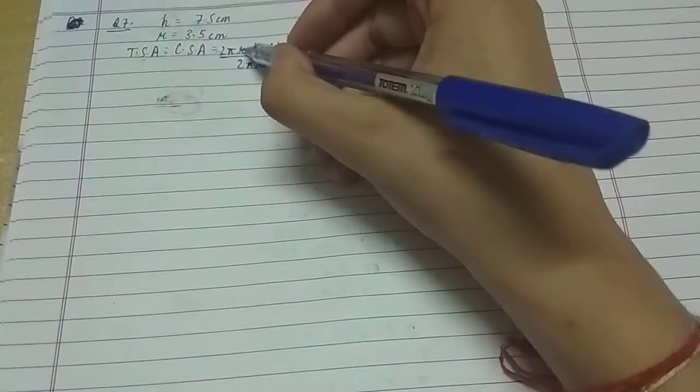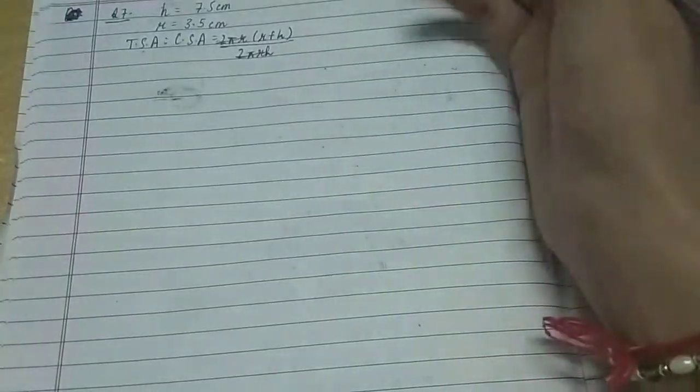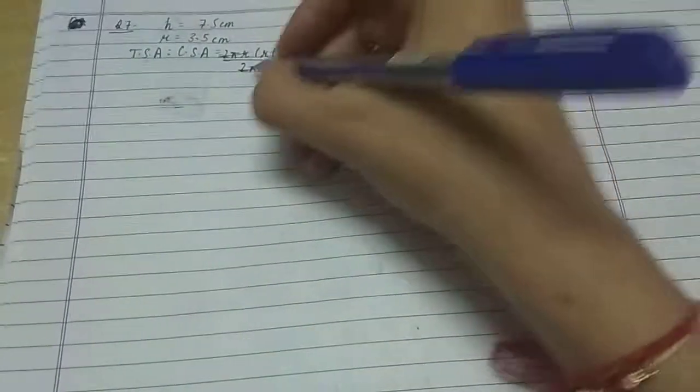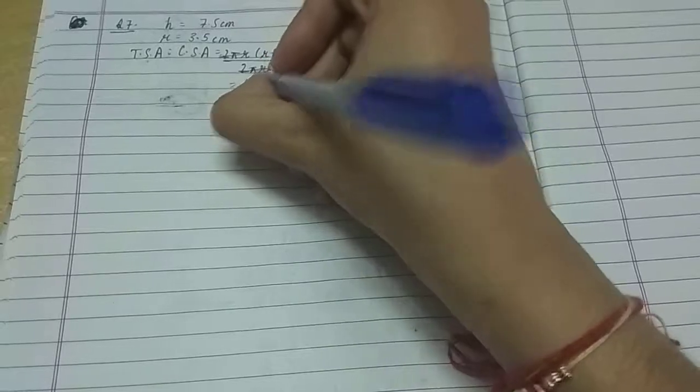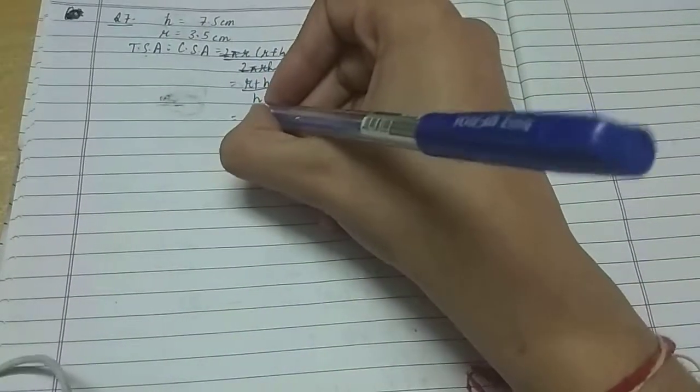...in order to make the calculation easy, we can cut 2πr by 2πr, right? This can be cut. So what would be remaining? (r + h) upon h. Now we can easily solve the question. Radius...